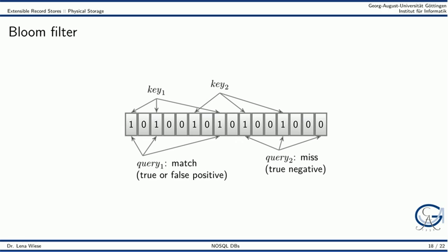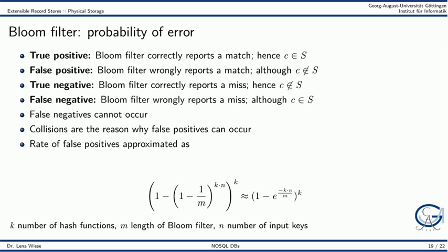In case one or more bits for a given query key are 0, we can be sure that we have a miss. We have a true negative and the value is not included in the data file. Using a bloom filter, we have a small probability of error.